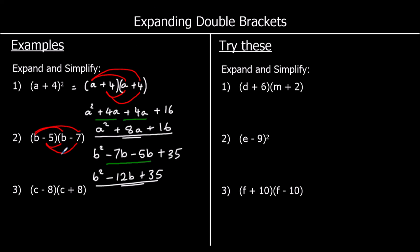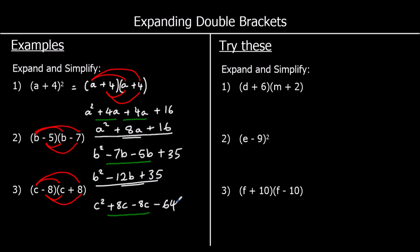And the last one: c times c is c squared. c times a positive 8 is plus 8c. A negative 8 times c is negative 8c. And a negative 8 times a positive 8 — a negative times a positive is negative, and 8 times 8 is 64. Collecting like terms, 8c take away 8c is nothing. So we've just got c squared minus 64. We call that the difference of two squares — c is squared and 64 is 8 squared, with a minus between them. We get that when we've got the same terms in the brackets but one with a plus and one with a minus.